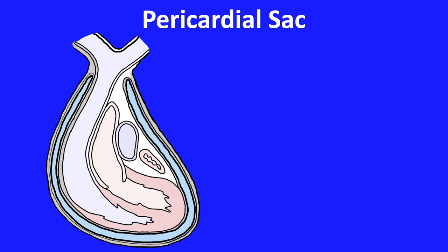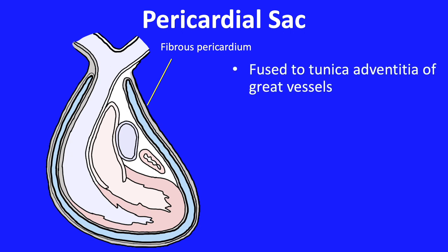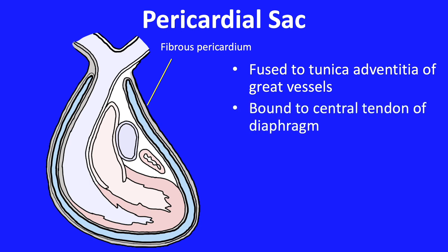The outer layer of the pericardial sac is known as the fibrous pericardium, and it is fused to the tunica adventitia of the great vessels, offering some protection as they exit the heart. The fibrous pericardium is bound to the central tendon of the diaphragm. Perhaps you have had a chest X-ray and were told to hold your breath before the image is formed — this is because if you breathe and the diaphragm moves, the pericardium moves with it, and the heart image will not appear as sharp.